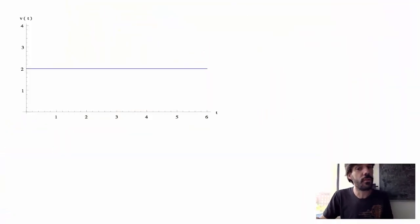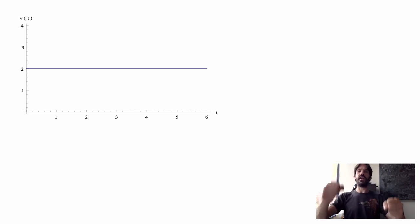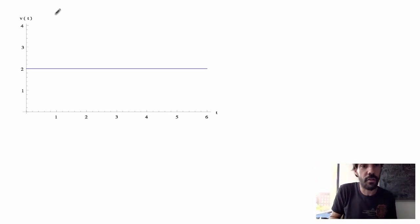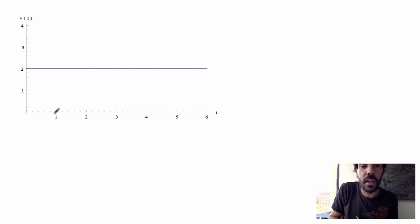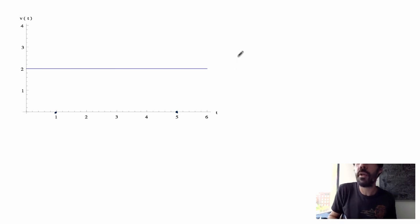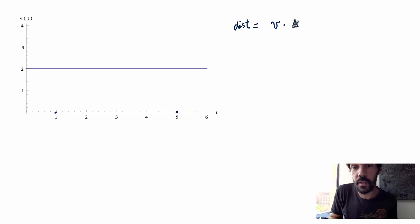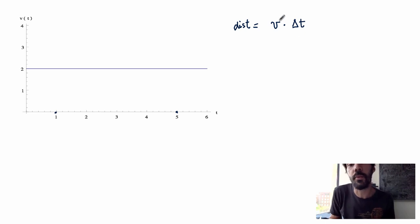Let's investigate by first studying a very simple case, then try to generalize it for arbitrary velocity functions. Suppose first that I'm driving on cruise control, so my velocity is constant, say 50 km per hour. Mathematically I could sketch the graph of my velocity function and I'll just get a horizontal line. The distance between 1 hour and 5 hours will just be given by the product of the velocity times delta t, which is the full time interval, so 5 minus 1 equals 4.